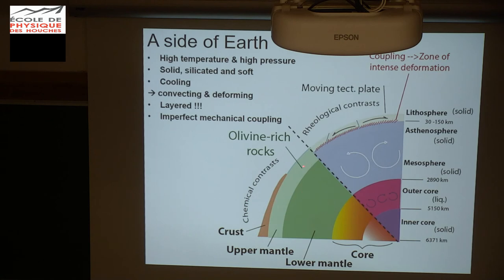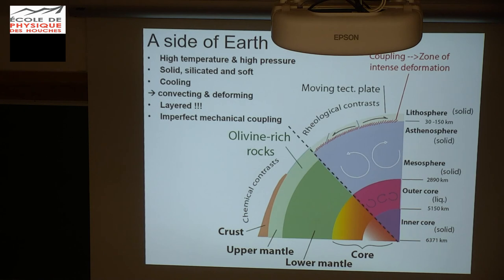Olivine basically composes between 60 and 80 percent of the pale green layer here. We also have a classification based on the strength of the different layers inside the Earth. The first layer is the tectonic plate, really at the surface of the planet — they're moving laterally. Below, we have another layer, the pale purple layer, which is convecting. The Earth is cooling down, generating convection.